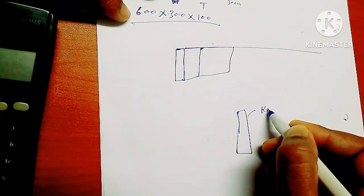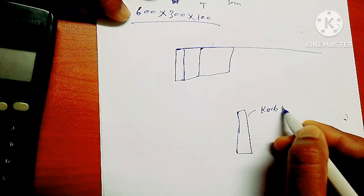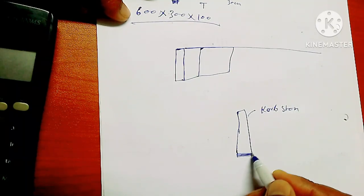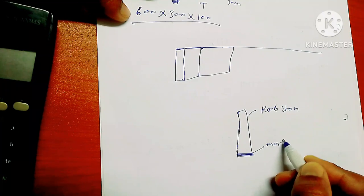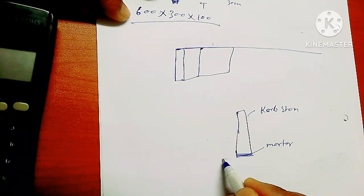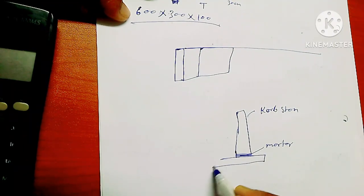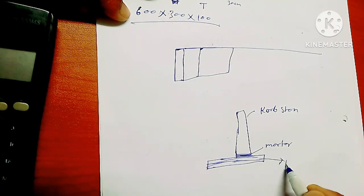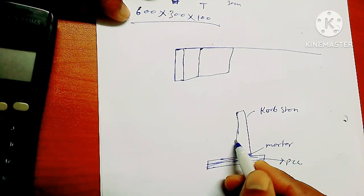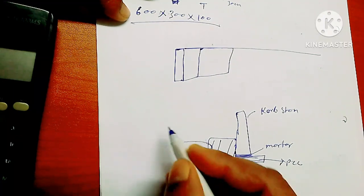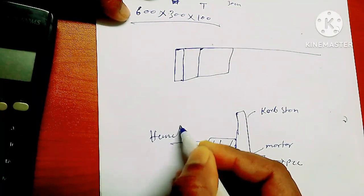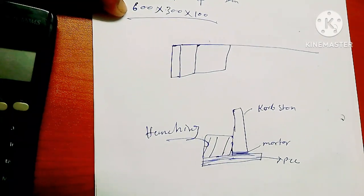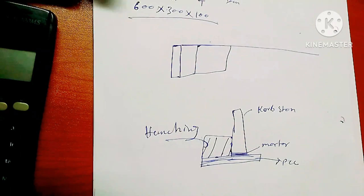Curb stone, curb stone. And this is our mortar. And after this, this is our PCC. This is our PCC. And this we do as hunching. This is our hunching. Okay, thank you.